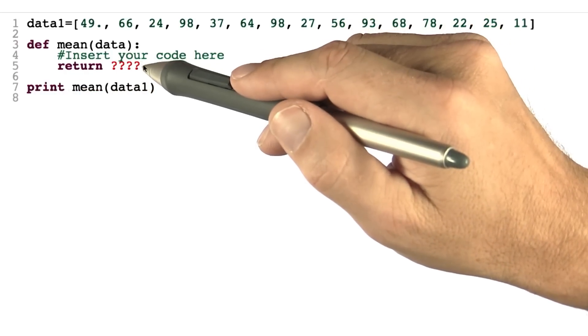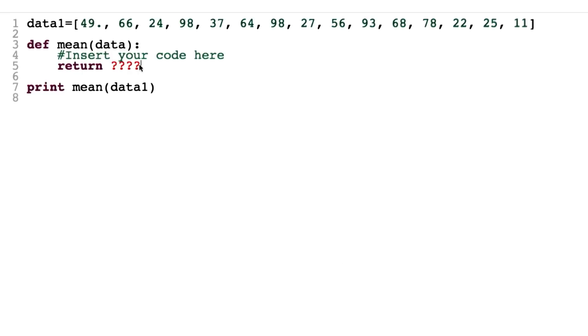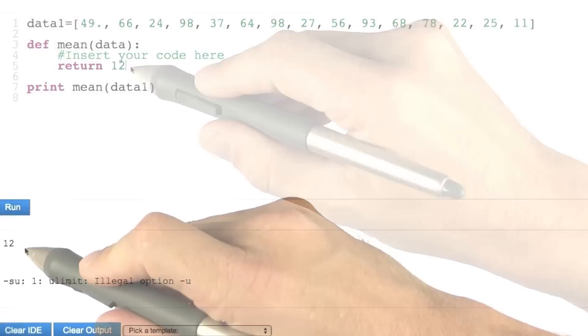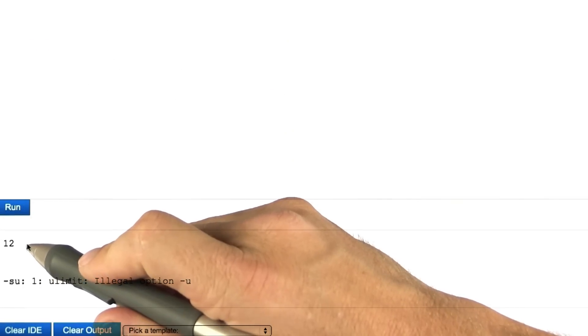So let me give you an example. Suppose you put a fixed value over here, like 12 in this case. And now you hit the run button. Then the output would be 12, which is not the correct answer. But you can play with that.